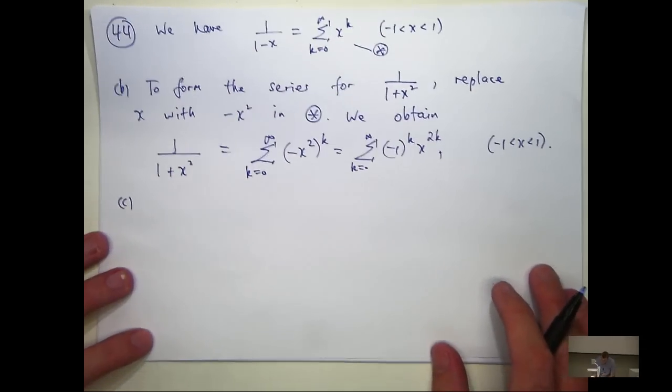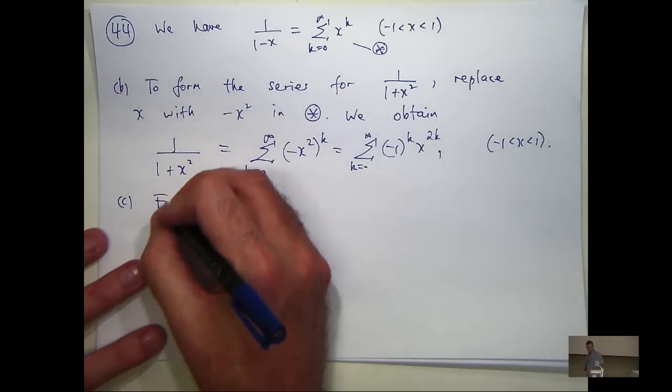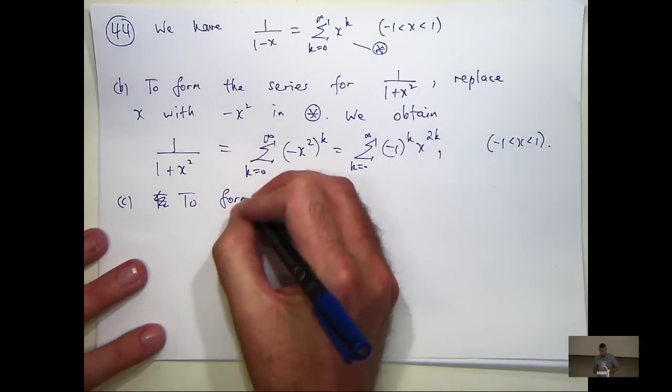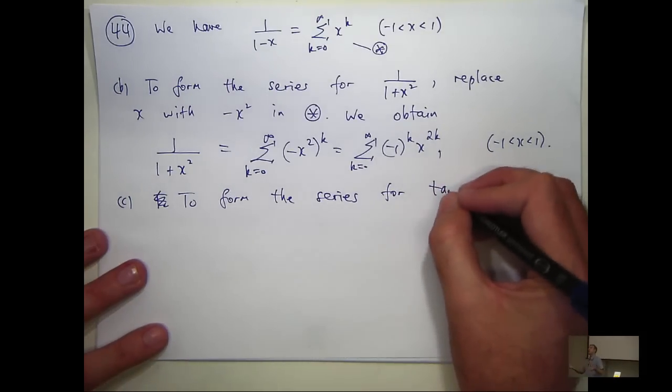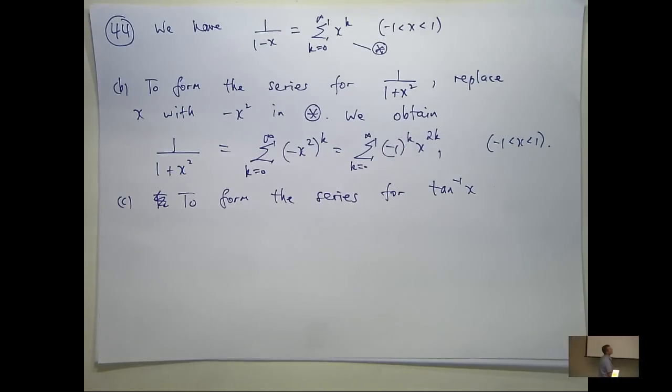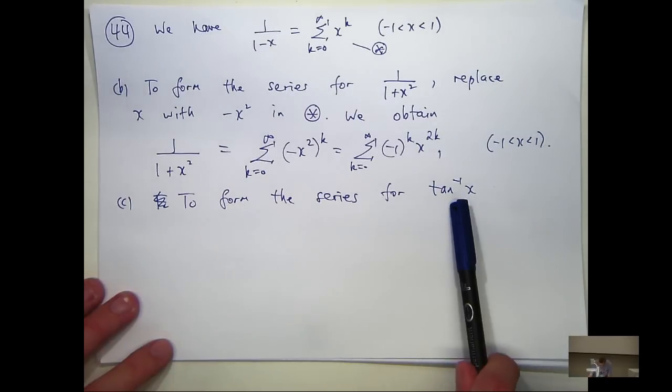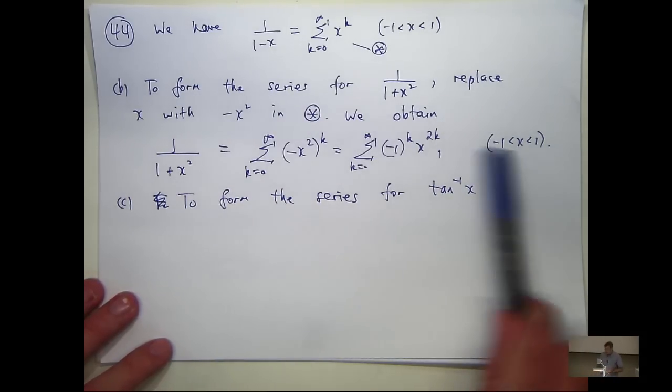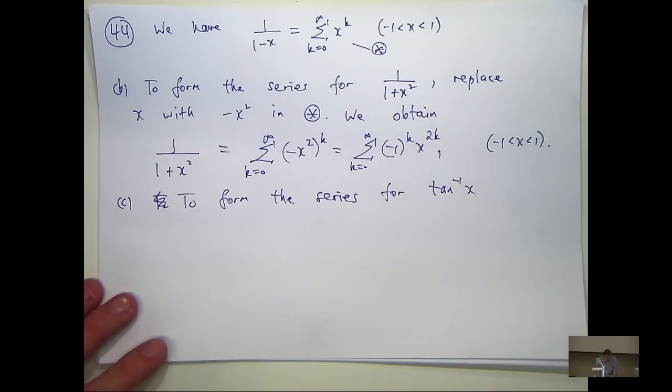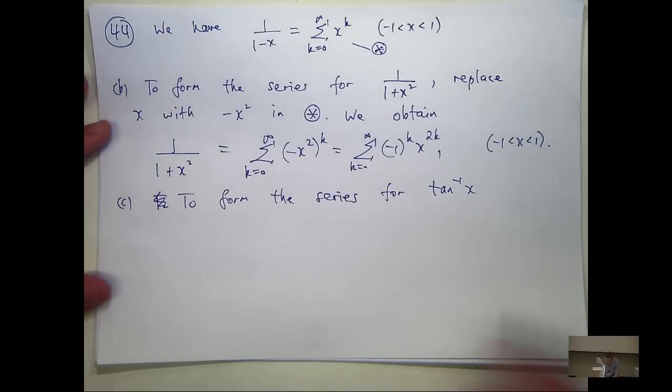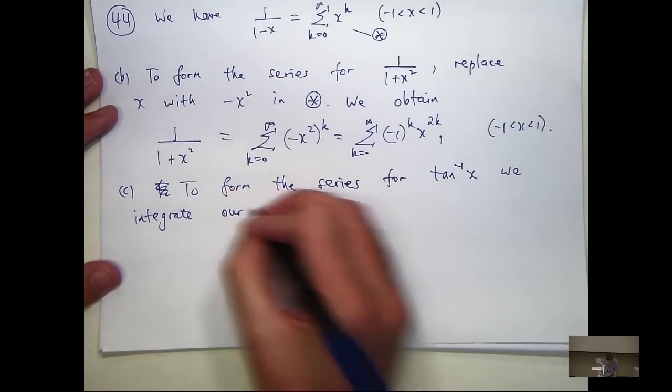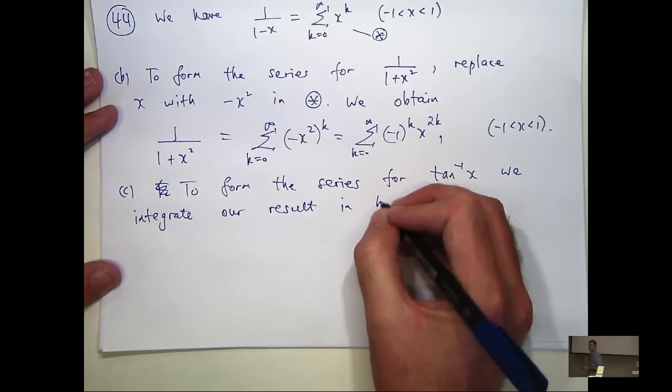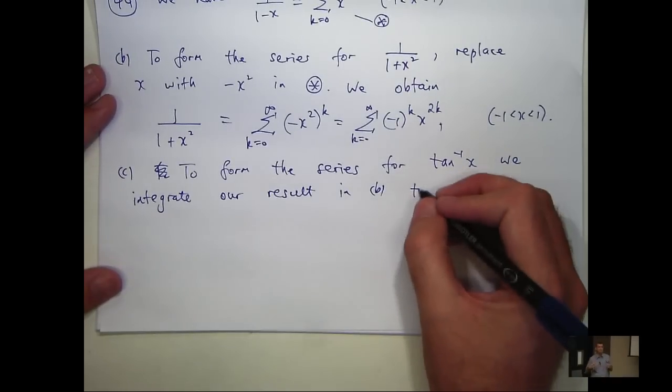Okay, so part c uses part b to obtain a result. So we're asked to form the power series for tan inverse x about zero. So any ideas? Yeah, integrate part b. We know that if we integrate this interval of convergence, then we can swap the integral and the summation. Now that's a big step. That's a huge step. There's a lot of analysis in that.